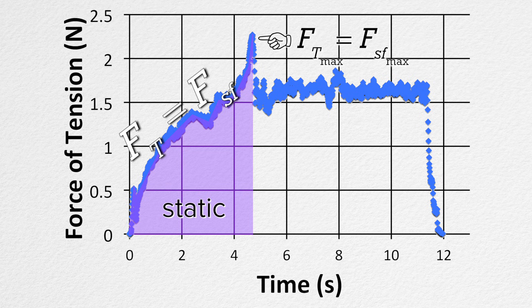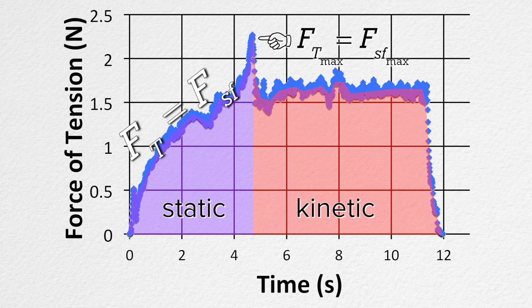This means the maximum force of static friction is also the maximum force of tension. Then the block starts to move and the friction switches to kinetic. After the block starts to move, the force of tension decreases because — Bo, why do you think the force of tension decreases when the block starts to move?